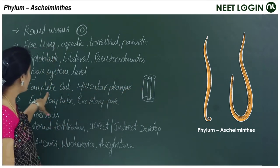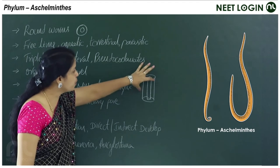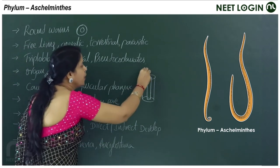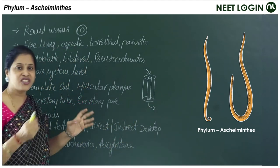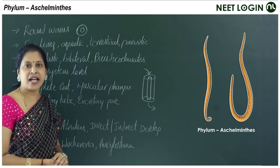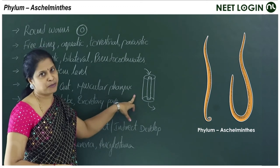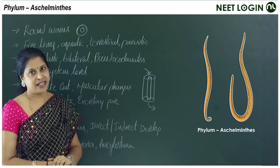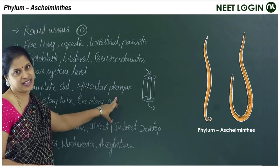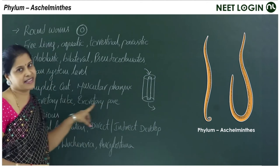Aschelminthes show a complete gut — a tube-within-a-tube organization — with one opening for ingestion and another for egestion, unlike cnidarians and platyhelminthes which have a sac-like gut with a single opening. The body wall is muscular but the alimentary canal is non-muscular, except the pharynx which is highly developed and muscular.